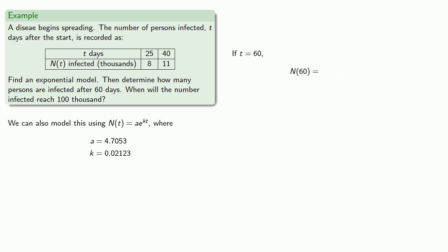And again, we can find out what happens after t equals 60. N(t), which is the same as we got before.